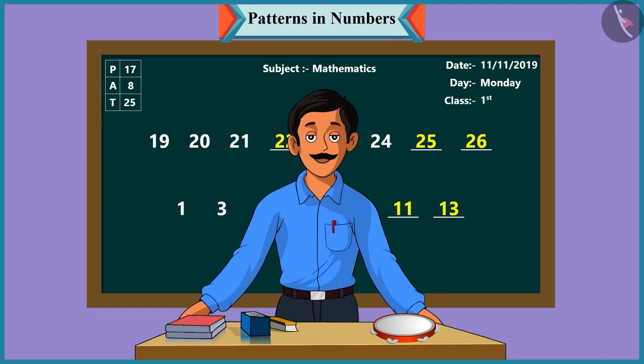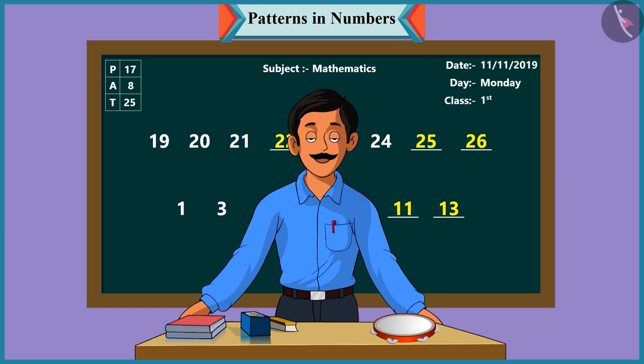And in the next pattern, two has been added to each number to proceed with the pattern. Like adding one and two makes three, and adding two to three makes it five. Children, tomorrow we will see more number patterns. Till then, bye, children. Ok, sir. Bye.